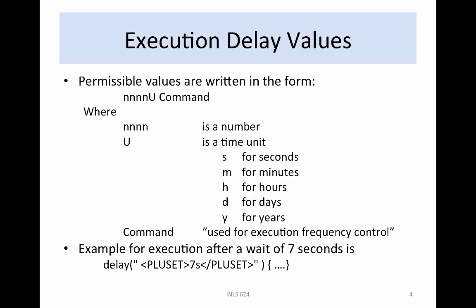Thus, to execute a delayed rule after a wait of 7 seconds, use delay(<PLUSET>7s</PLUSET>) {...}. The operations in the braces will be executed after a delay of 7 seconds.